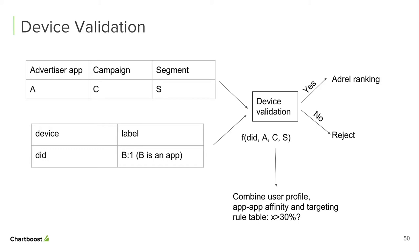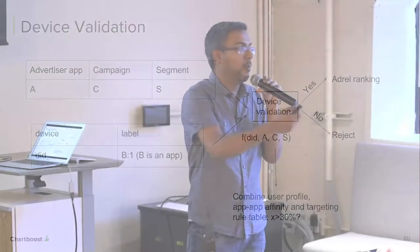To recap: we started with an overview of Chartboost and how advertising works. Then we covered the high-level architecture — building blocks of ad tech and how the ad serving and data components are architected. We then double-clicked into machine learning and audience targeting products at Chartboost, where Spark is heavily used. That brings an end to today's presentation of ad tech at Chartboost. I'll now open it up for Q&A.